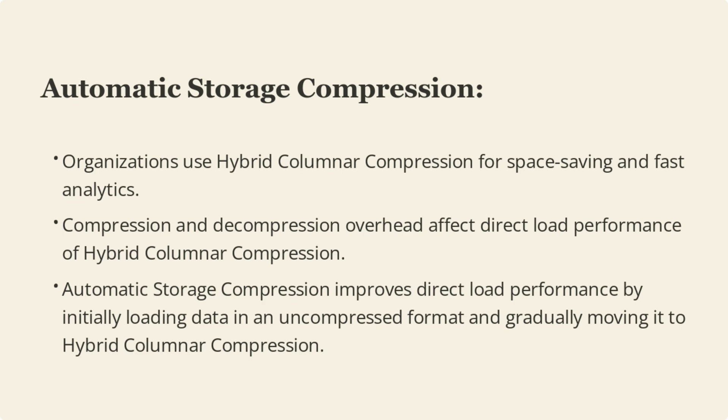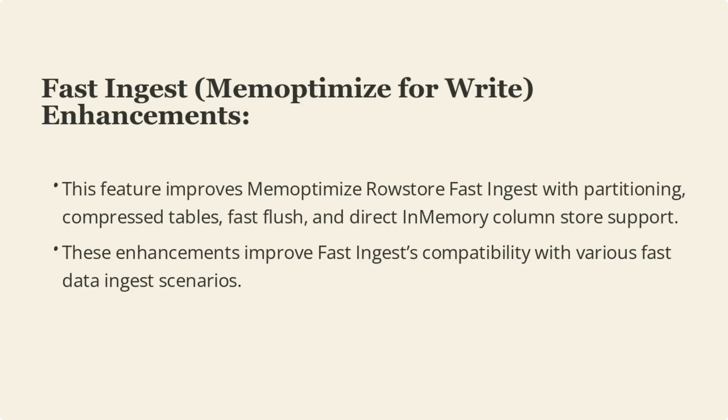Organizations use Hybrid Columnar Compression for space saving and fast analytics. Compression and decompression overhead affect direct load performance. Automatic storage compression improves direct load performance by initially loading data in an uncompressed format and gradually moving it to Hybrid Columnar Compression. This also enhances memoptimize row store fast ingest with partitioning, compress-tables fast flush, and direct in-memory column store support.